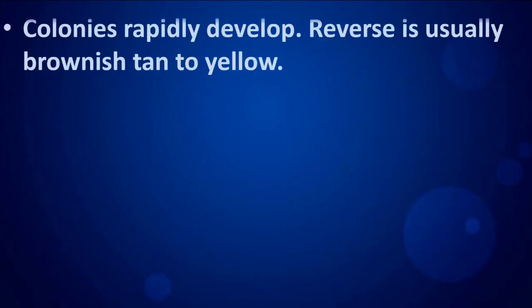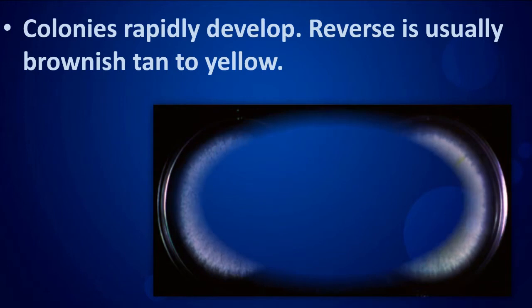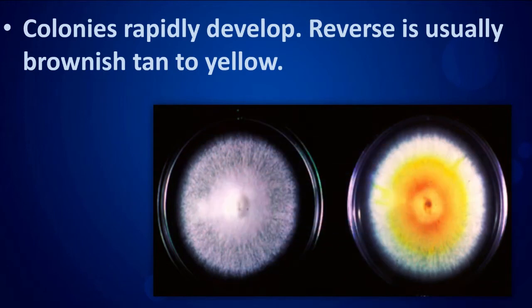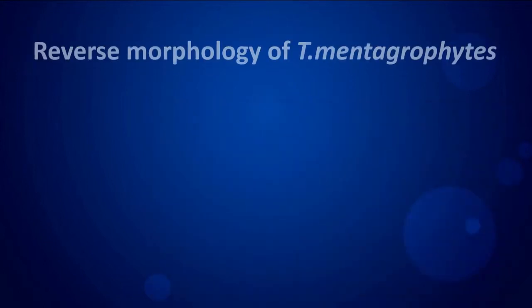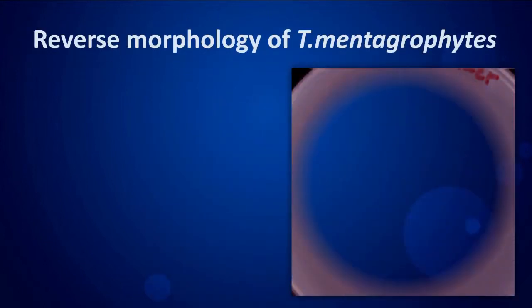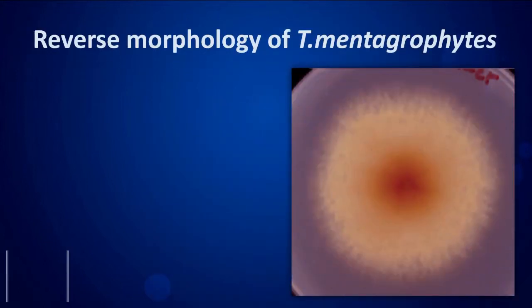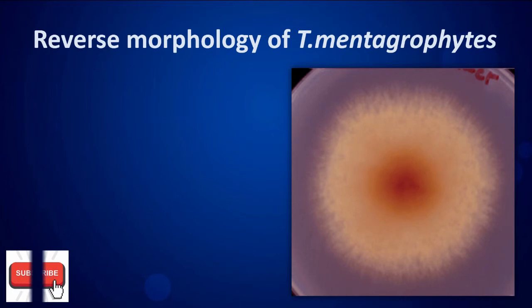Colonies rapidly develop. The reverse morphology of Trichophyton mentagrophytes is usually brownish tan to yellow.